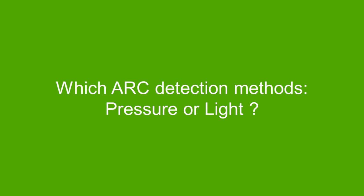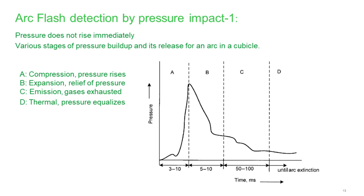Now we want to apply the arc flash system. What method should we use? We can use pressure sensors or light sensors. Looking at the pressure sensor first: pressure does not rise instantaneously. Research done in one cubicle identified four stages: first, compression and pressure rise taking 3 to 10 milliseconds; then when the pressure relief opens in the switchgear, pressure drops — stage B, another 5 to 10 milliseconds; then emissions and gas drop — pressure starts to decrease in area C; and finally, pressure equalization in part D.